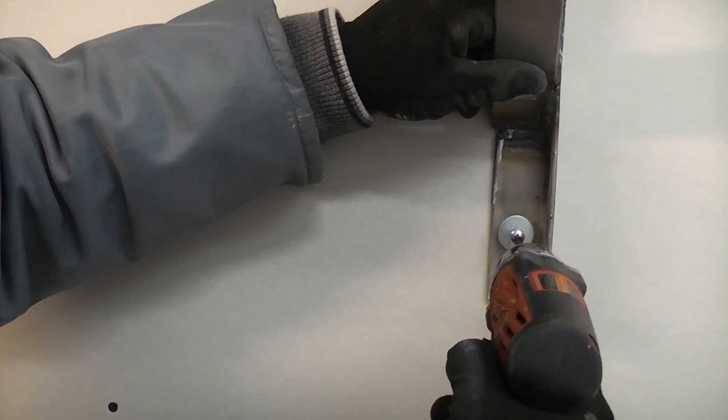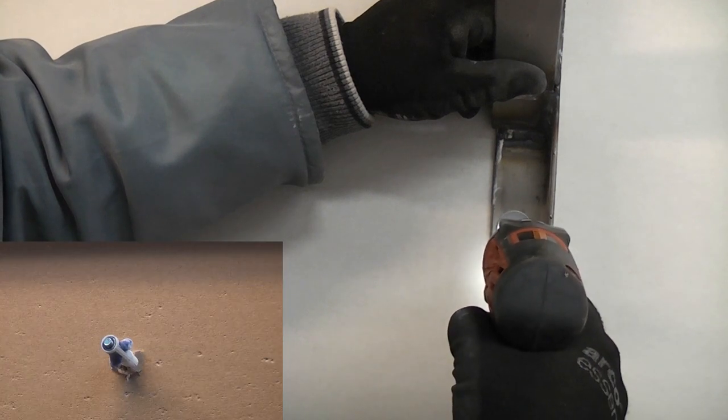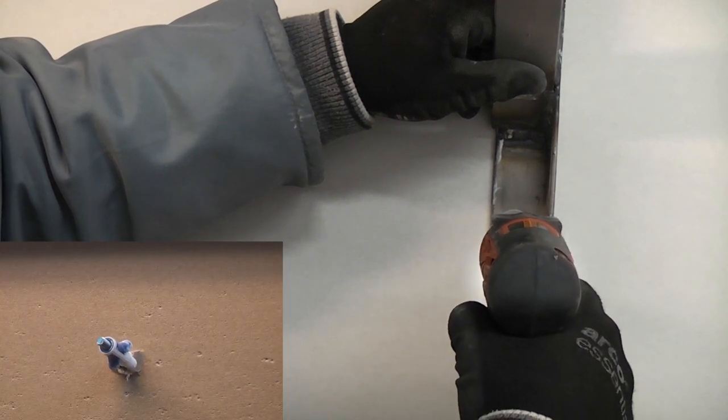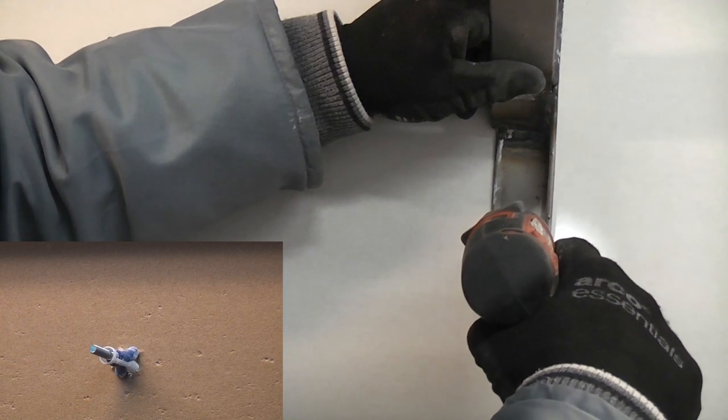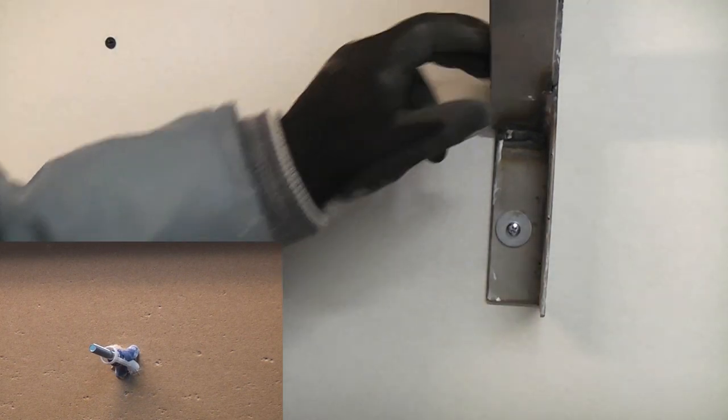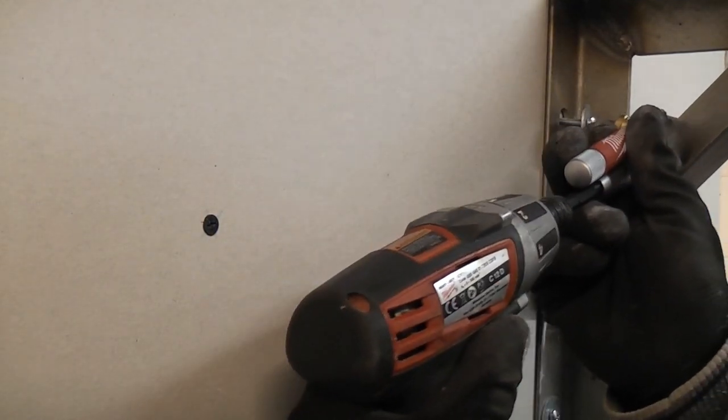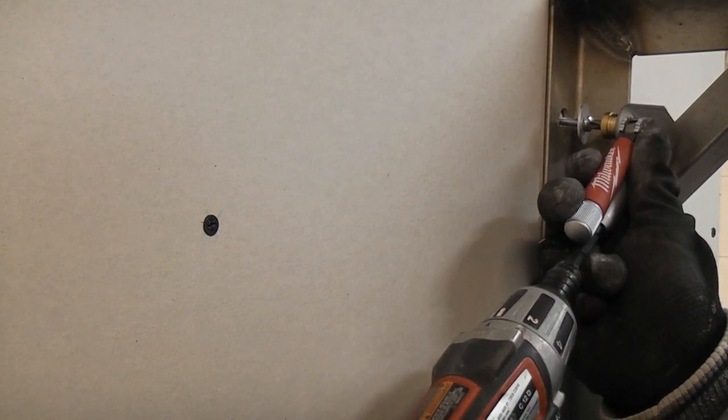And I can use a cordless drill on the bottom one. We don't want to go mad when we're doing that. And then for this one, we're going to have to use the right-angled attachment because of the shape of the bracket.